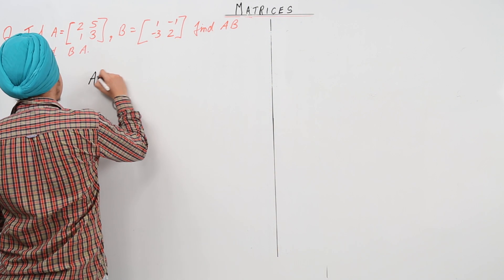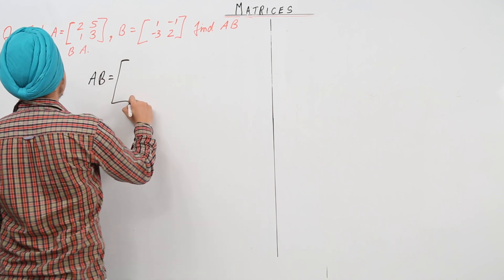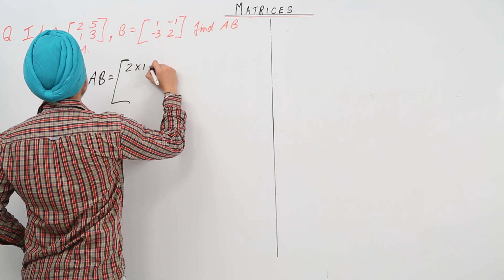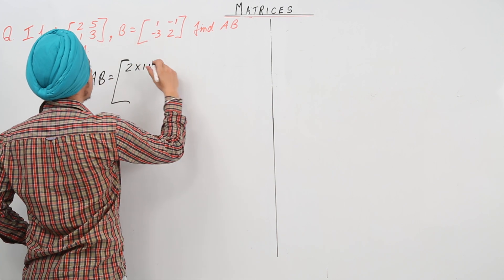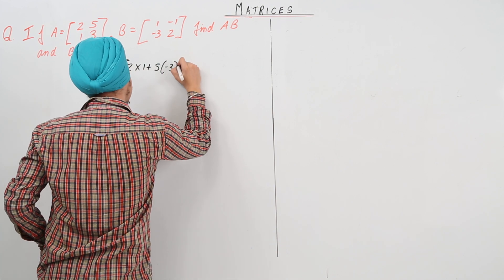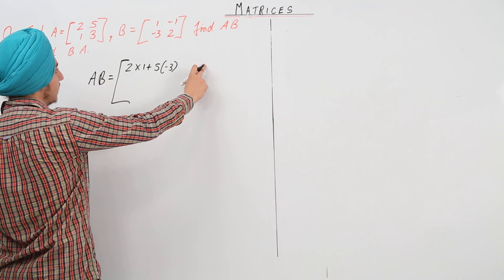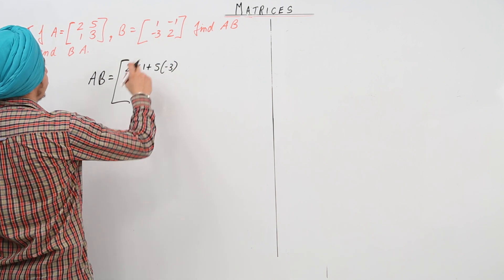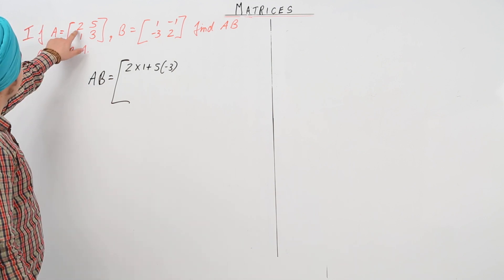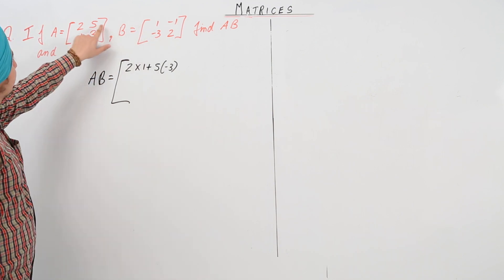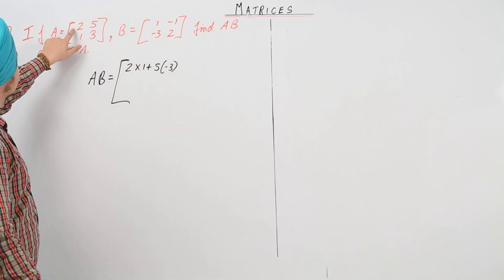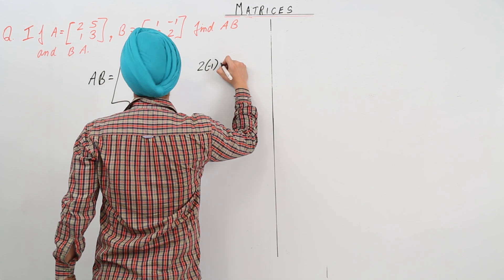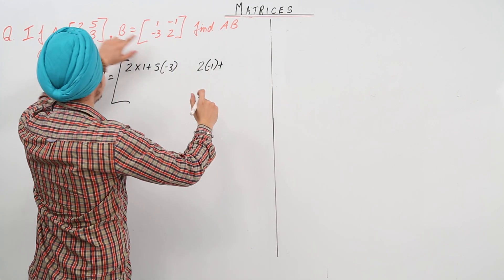I'll start the question directly. AB is equal to: for the first term we have 2 into 1 plus 5 into minus 3, and for the second term we have 2 into minus 1 plus 5 into 2.